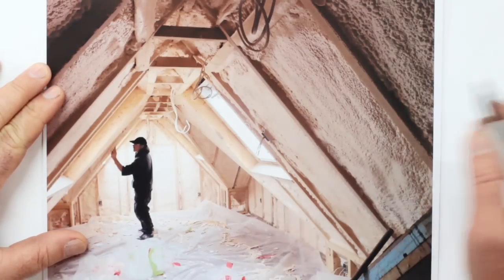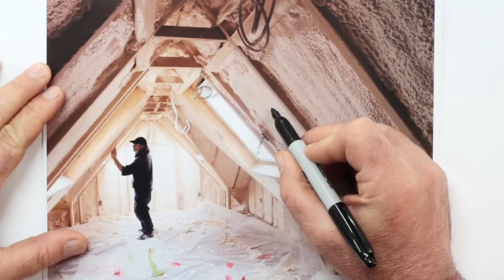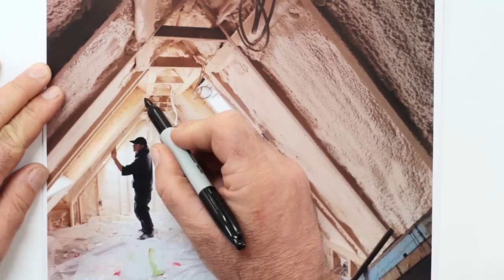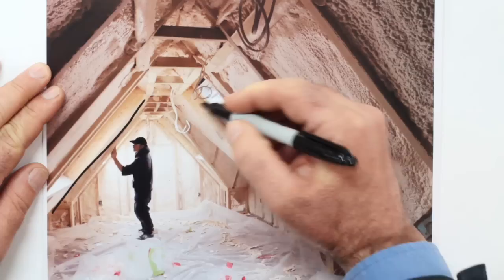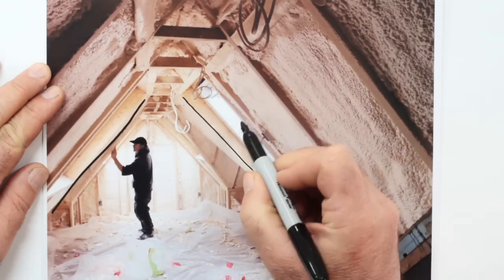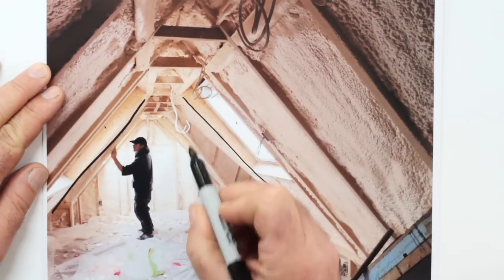This is some closed cell spray foam that's been put in this roof structure and a project of mine in the walls as well. This is the roof line here. This particular project has four roof windows in it, one next to each other on some gables which also have windows.